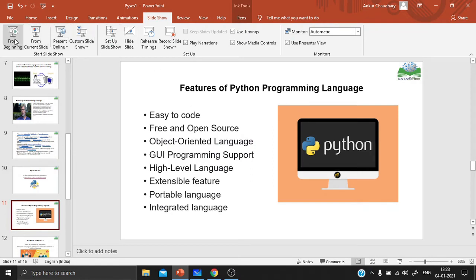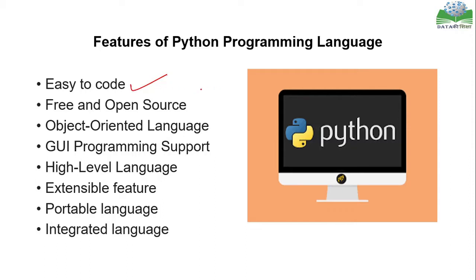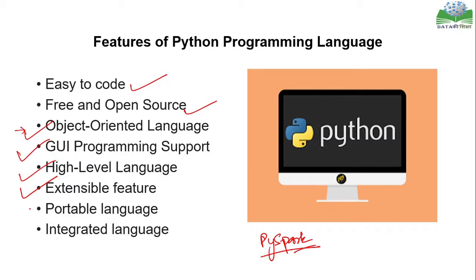Let's look at the features of Python. It is very easy to code — we will see in the next sessions how to code in Python, what packages, modules, and scripts mean. It is free and open source, meaning you can easily download and use Python. It is an object-oriented language supporting OOP concepts like inheritance. It has GUI programming support, it is a high-level language, and has extensible features — for example Python can be expanded to integrate with Spark engines. It is also a portable and integrated language, meaning it can integrate with other languages.